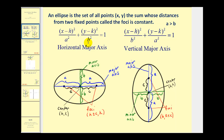If we can determine the value of a, it gives us the distance from the center to the endpoints of the major axis, and b gives the distance to the endpoints of the minor axis. We use the equation a² = b² + c² to find c, which is the distance from the center to the two foci. For a horizontal major axis, we add and subtract c from the x-coordinate of the center; for a vertical major axis, we add and subtract c from the y-coordinate.